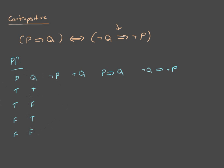Let's fill this out. Well, if both P and Q are true, their negations will of course be false. And if you have a true premise and true conclusion, then P implies Q is true.